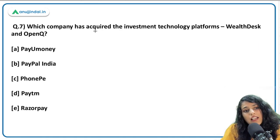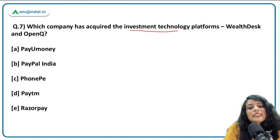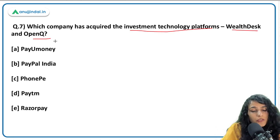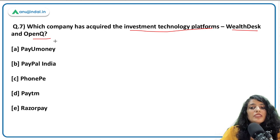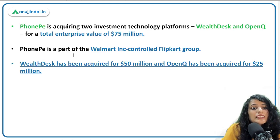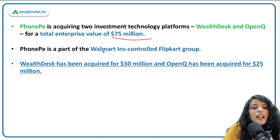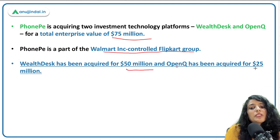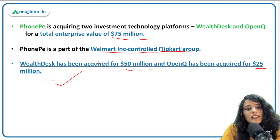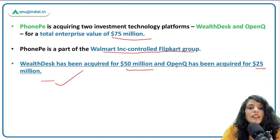PhonePe has acquired investment technology platforms WellDesk and OpenQ for a total enterprise value of $75 million. PhonePe is part of the Walmart Inc.-controlled Flipkart Group. WellDesk was acquired for $50 million and OpenQ for $25 million.